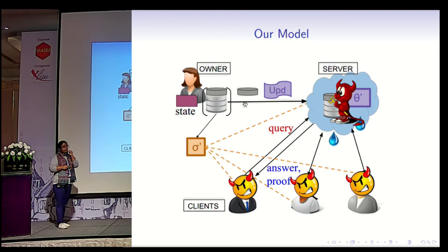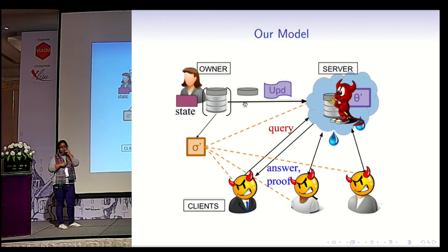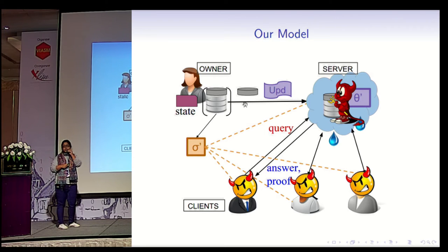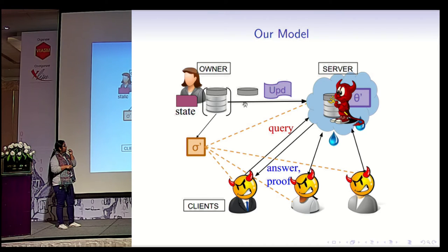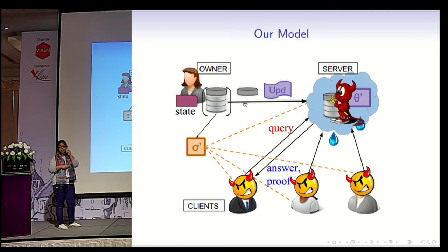A quick recap: the model we are considering is the same as this outsourced data structure model. Traditionally, only the server was considered to be adversarial, so the answers were not trusted because they were generated by the server, and additionally a proof had to be returned with the answer. But in this setting, we are also considering leakage from the proofs, which means we are also saying the client can be adversarial and trying to learn more information than the answer itself. So we want the answers to be simulatable given only the answer and nothing else.